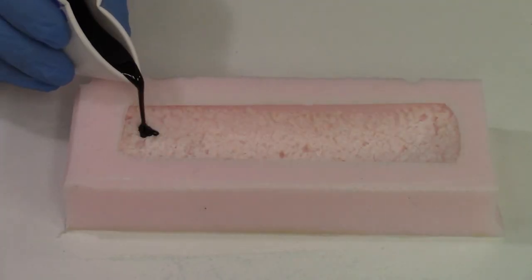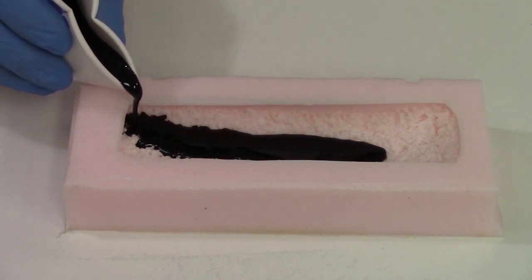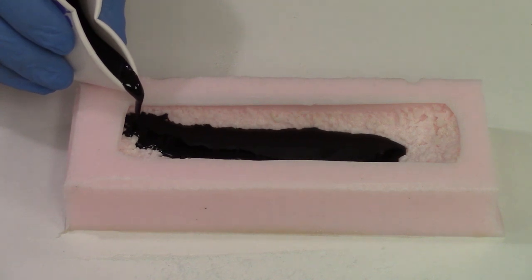Pick one corner and just pour nice and slowly. Let the resin self-level and naturally float in and around the detail.